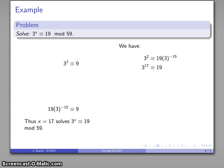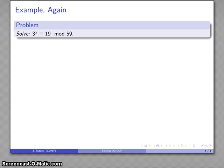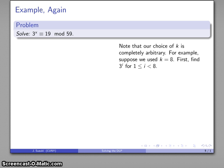Well, you might be worried that we picked k equals 5 initially, and maybe that has something to do with our ability to find the solution. Well, it doesn't really matter. Suppose I choose k equals 8, for example. So, I'm going to find the powers of 3 from 1 to 7. So, there they are.